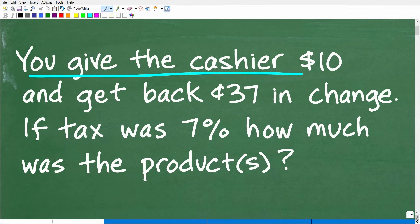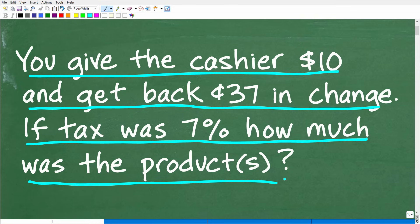You give the cashier $10 and get back $0.37 in change. Now, if sales tax was 7%, how much was the cost of the product or products? Alright, so that's the question.